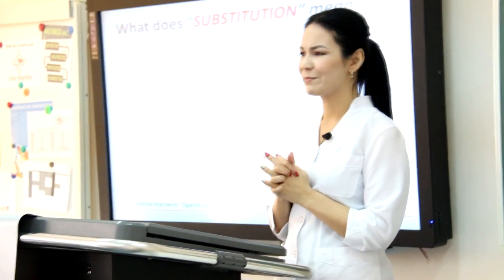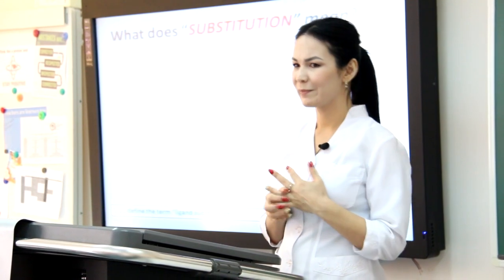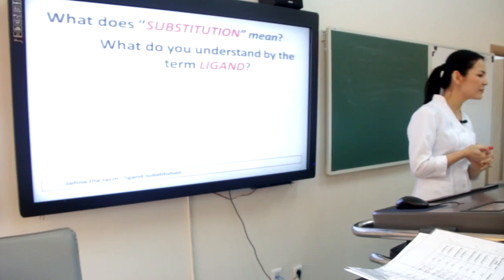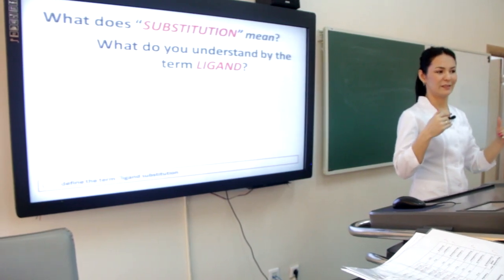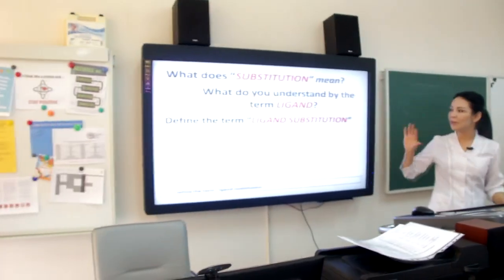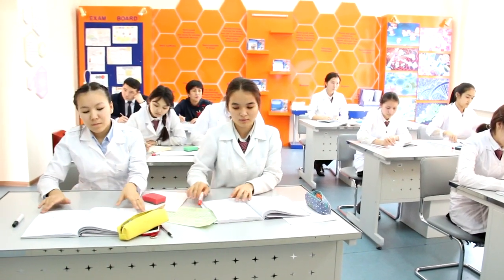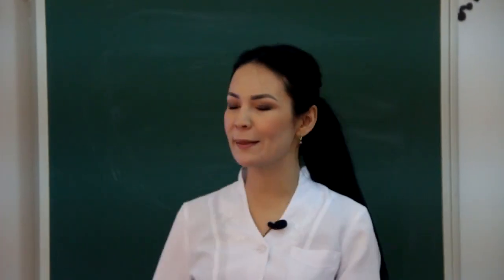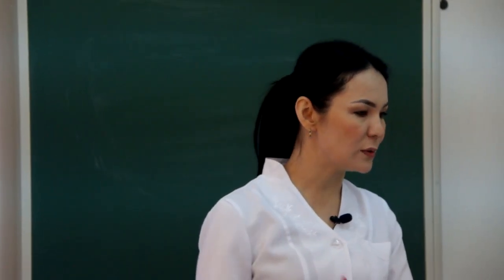What does substitution mean? Replacing — another word, changing places. And what is the meaning of ligands? Particles that can form a dative bond, donating lone pairs to a metal to form a coordinate bond. So ligand substitution is the reaction in which one ligand in the complex ion is replaced by another one.